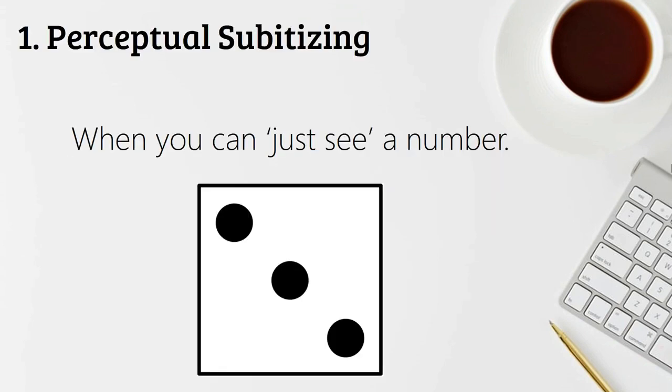Perceptual subitizing. This is when you can just see a number. I look at the table we're sitting at, I know that there's two drinks on the table. I didn't even have to count them. I look at a dice and I see that there's just three. Children can naturally subitize to around five when they are coming up to five years old.